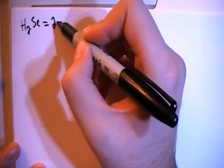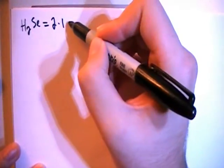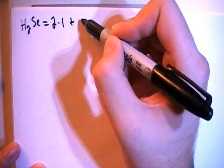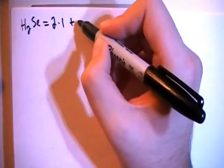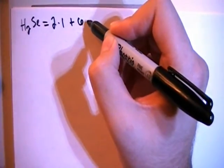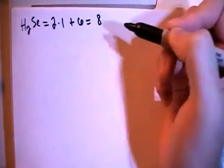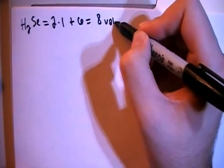That's going to give us two hydrogens, each with a single valence electron, plus one selenium. That's going to have six valence electrons for a total of eight valence electrons.